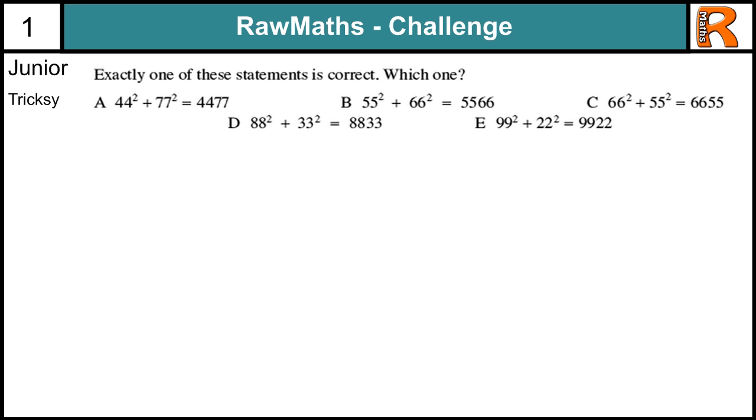Okay, here we go with the solution to the Junior Trixie question. Now, quite often in Maths Challenge questions, they have questions where you have to do some quite difficult calculations, but quite often there's shortcuts you can take. One of the shortcuts you can do is if you're trying to work out whether something equals something, you really only need to start with the last digit. And if that is equal, if we know exactly one of these is correct, then we just look for the one that has the right number on the end.